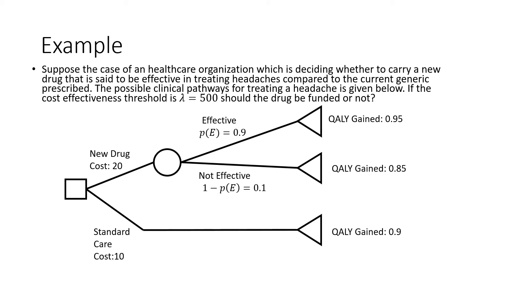We have this tree over here where you have your standard care which goes in. We have a QALY that is gained there at the end. And you have your new drug where you move into this chance node where you have a 90% chance of getting a QALY of 0.95, or if it's not effective 10% of the time, you only gain a QALY of 0.85.